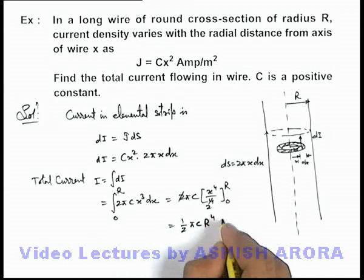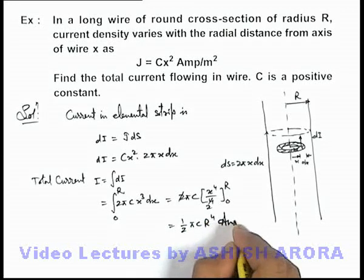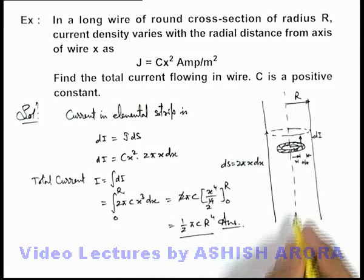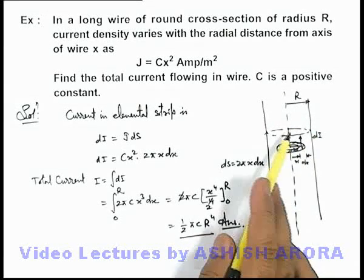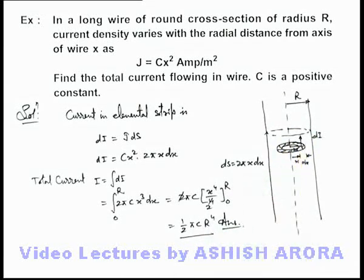Applying the limits, we get (1/2)πcr⁴. That will be the answer to this problem — the total current flowing in this wire of cross-sectional radius r.